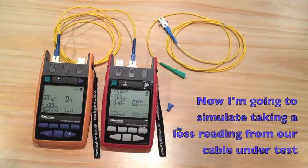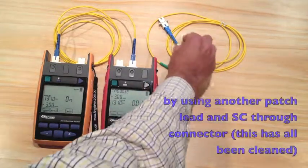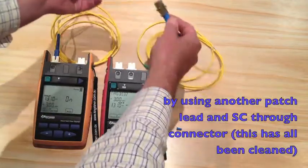Now I'm going to simulate taking a loss reading from our cable under test by using another patch lead under SC through connector. This has all been cleaned.